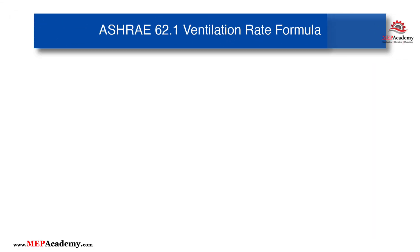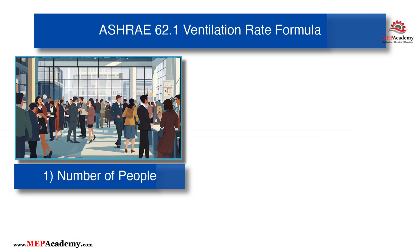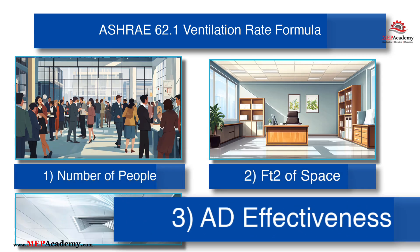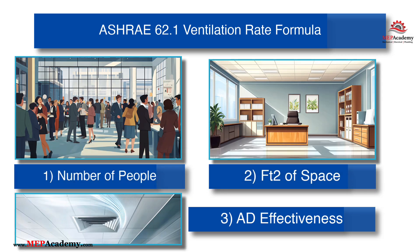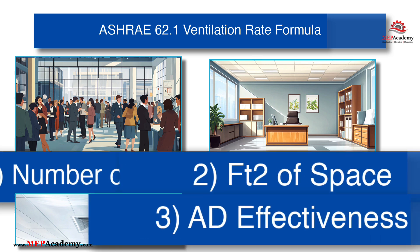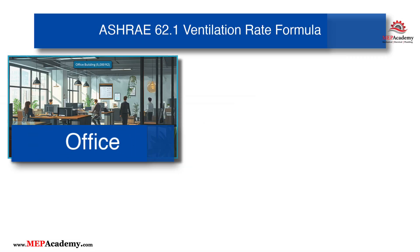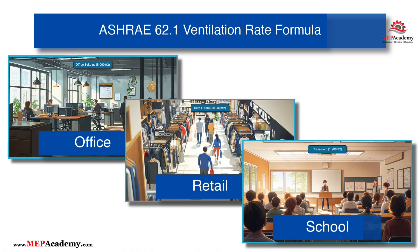The ASHRAE 62.1 Ventilation Rate Formula is based on three key factors: the number of people in the space, the square footage of the area, and the zone air distribution effectiveness. The number of people determines the amount of fresh air needed for occupants, while the square footage accounts for the ventilation required to offset contaminants from building materials and activities. The zone air distribution effectiveness adjusts the airflow based on how well the ventilation system distributes air within the space, ensuring optimal air quality. Let's go through three examples — an office, retail store, and classroom — to illustrate how the ASHRAE 62.1 Ventilation Rate Calculation works in different spaces.